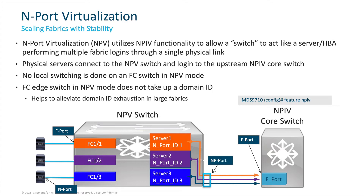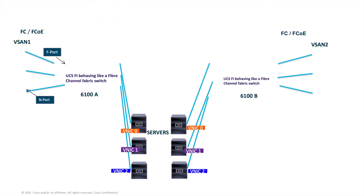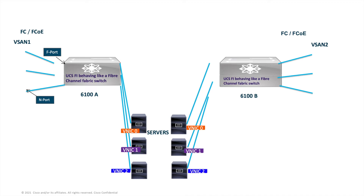Switch mode is not suitable for larger deployments in larger data centers. So it would be better if you take that Fibre Channel storage and connect it directly to the fabric interconnect. There is now a switch mode for Fibre Channel switching, so if you want to set up a pod with storage connected directly to the fabric interconnect, you can convert the fabric interconnect to switch mode.